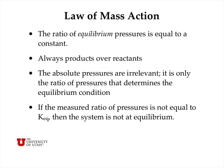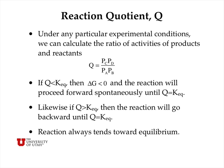If the measured ratio of pressures is not equal to K, then the system is not at equilibrium. This allows us to define a reaction quotient Q: under any particular experimental conditions, Q is the ratio of activities of products to reactants. If Q is less than K, then delta G must be less than zero, and the reaction will proceed forward spontaneously until Q equals K. If Q is greater than K, the reaction will go backwards toward reactants until Q equals K. The reaction always proceeds in the direction toward the equilibrium state.